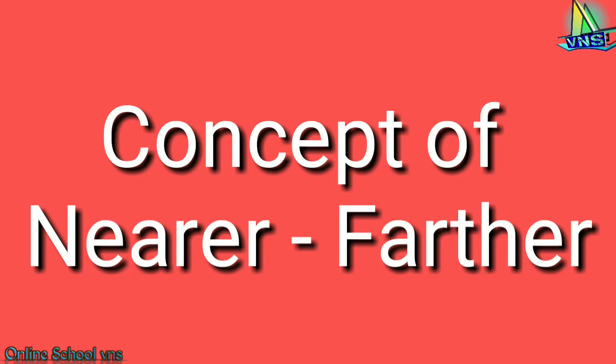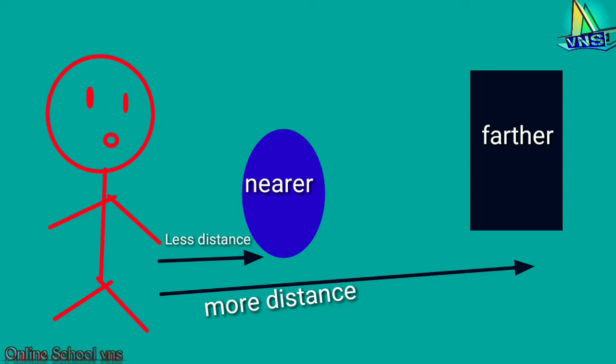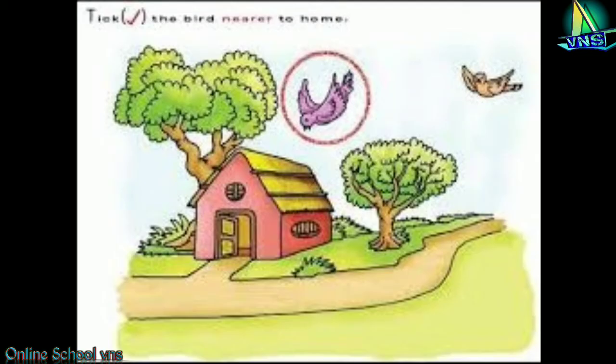Firstly, we will understand what is the meaning of nearer and what is the meaning of farther. With respect to an object, if an object has less distance it is called nearer, and if the other object has more distance it is called farther. Look here in this diagram.